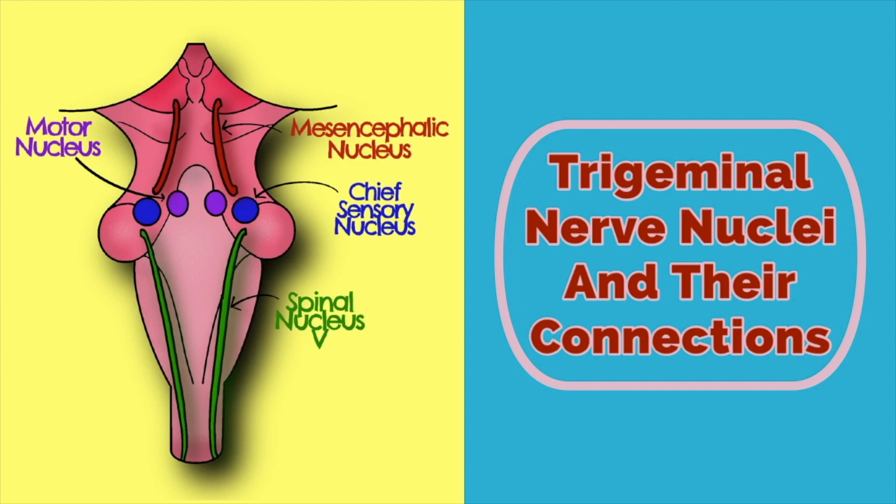But what is the trigeminal nerve? The trigeminal nerve is cranial nerve five. It is the main sensory nerve of the head and innervates the muscles of mastication. The nerve exits the pons of the brainstem and has three main divisions: the ophthalmic, maxillary, and mandibular branches.